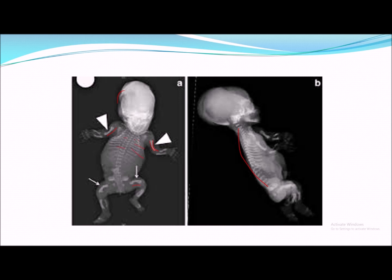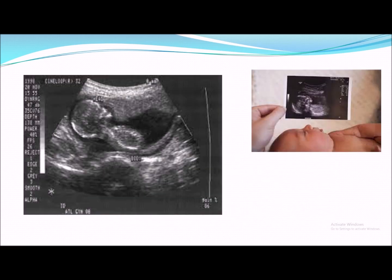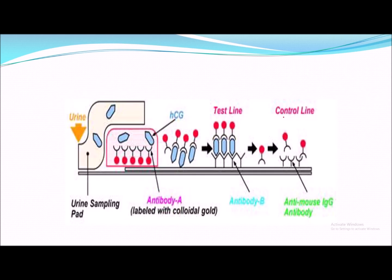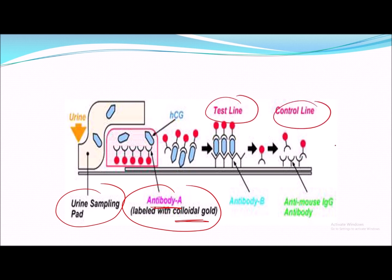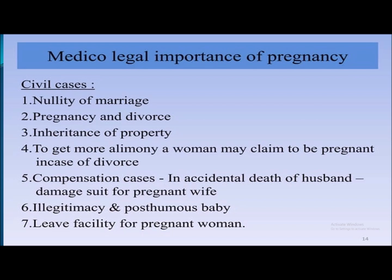Ultrasound is also a certain or positive sign of pregnancy; it can estimate fetal length and fetal weight. Immunological tests use a urine sample with an impregnated antibody labeled with colloidal gold, with a test line and a control line — this is the estimation of beta-human chorionic gonadotropin (beta-hCG). This antigen-antibody urine pregnancy test is also a positive sign, although it can be positive in other conditions as well.